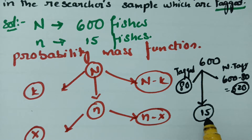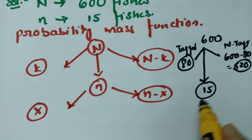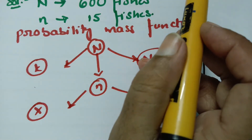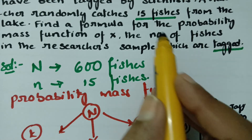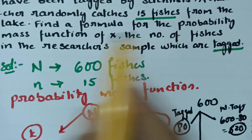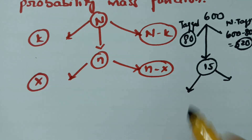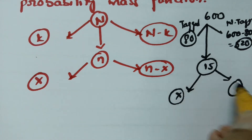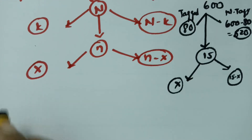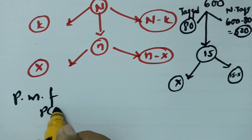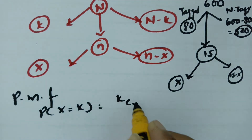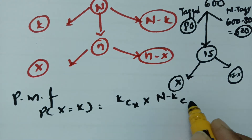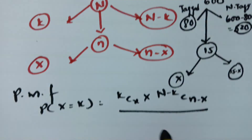A researcher randomly catches 15 fishes out of 600 fishes. We have to find out the probability mass function. According to the probability mass function formula, the probability P(x) equals k C x into (N minus k) C (n minus x), divided by N C n. Here n minus x is 15 minus x.